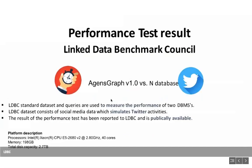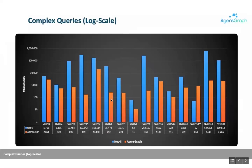Regarding performance test results from LDBC benchmarking, the orange-colored bars represent AgensGraph results and blue represents a competitor. Looking at query number four specifically, AgensGraph was approximately 2,000 times faster than the competitor. This query was looking to find new topics — specifically tags attached to posts created by a person's friends within a given time interval, excluding tags from older posts.